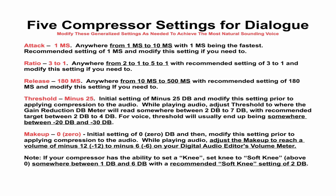Threshold: minus 25 dB initial setting. Modify this setting prior to applying compression to the audio. While playing audio, adjust threshold to where the gain reduction dB meter reads somewhere between 2 dB to 7 dB, with a recommended target between 2 dB to 4 dB. For voice, threshold will usually end up being somewhere between minus 20 dB and minus 30 dB.